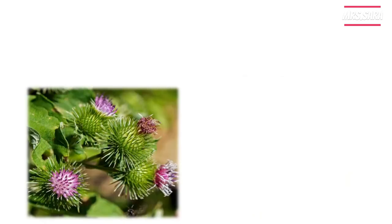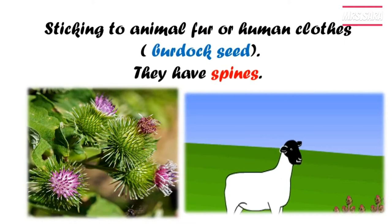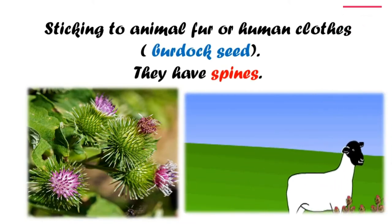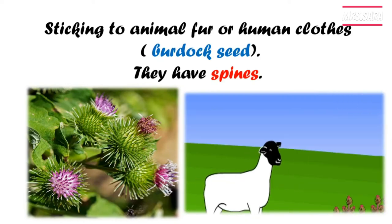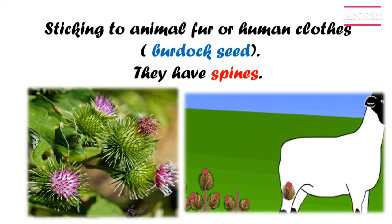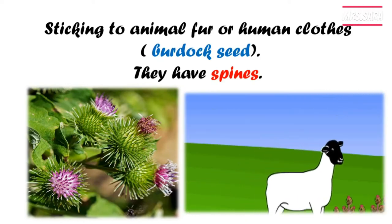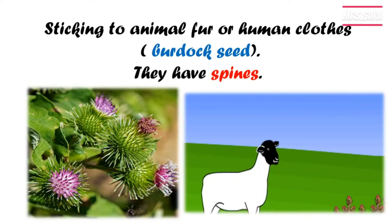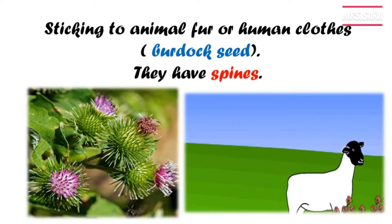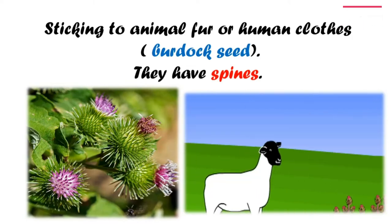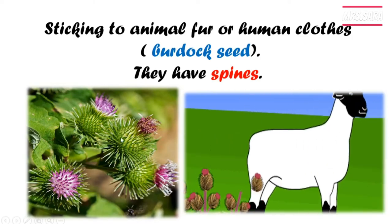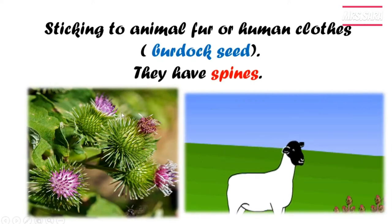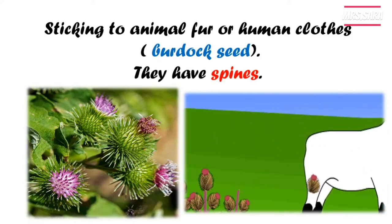This is called burdock seed. The burdock seed sticks to the animal's fur or the human's clothes. This is the third way of seed dispersal — sticking to animal's fur or human clothes. Our example is the burdock seed. As you can see, the burdock seed has spines, and those spines stick to the animal's fur or the human's clothes.